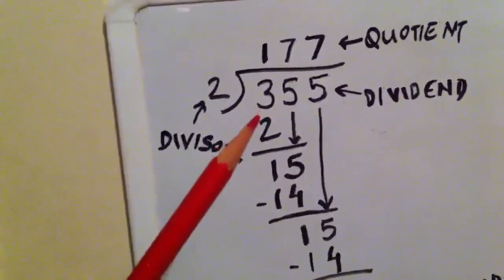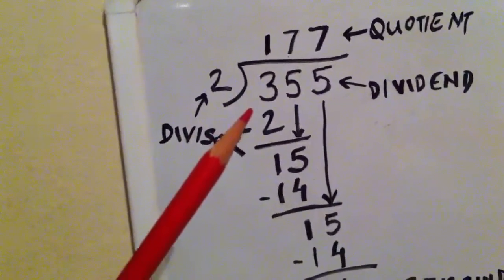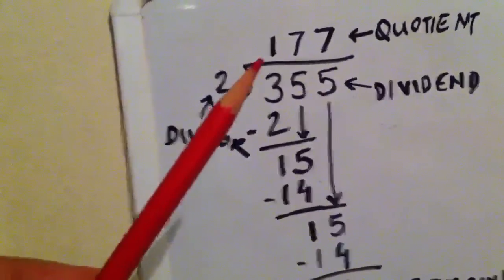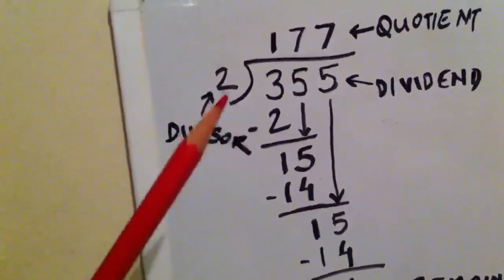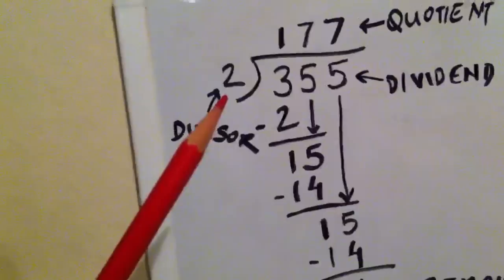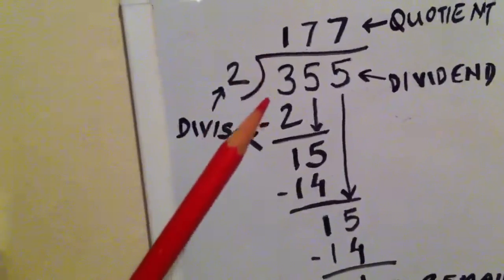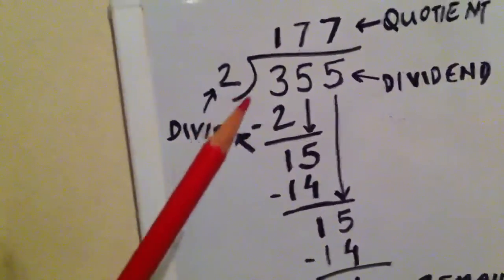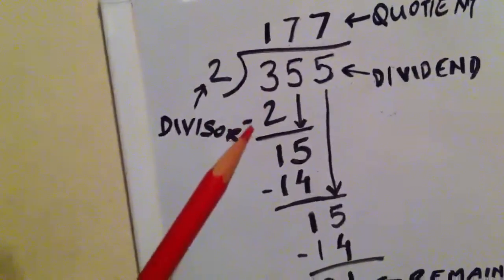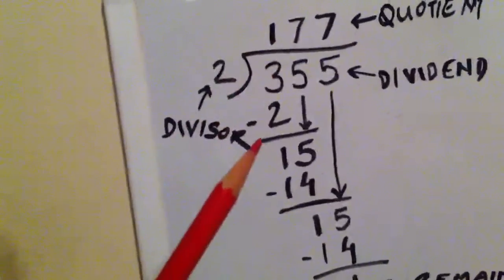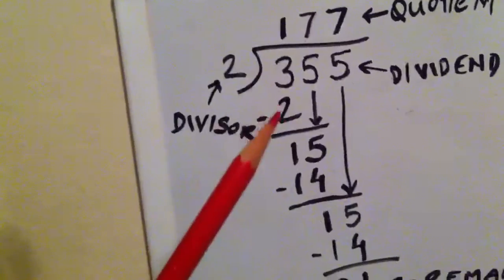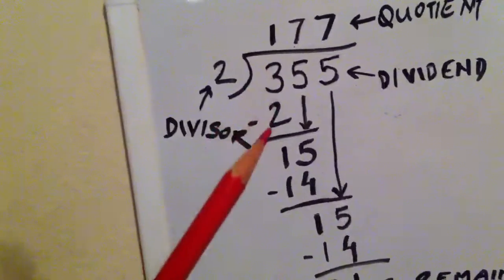So in this case, 2 times 1 is 2. We cannot use the next number, that is 2 times 2, because 4 is greater than 3. We either need 3 or less than 3. So 2 times 1 is 2.